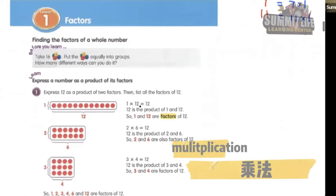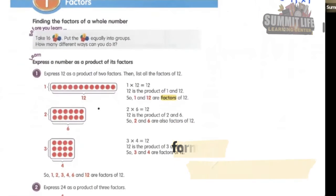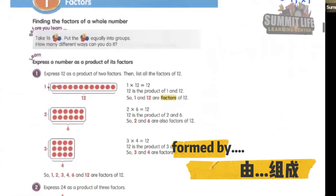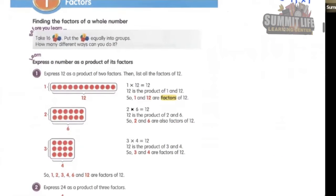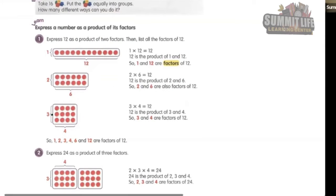12 can be formed by one times 12. It can also be formed by two times six — you can see two rows of six, it is also 12. It can also be formed by three times four — three rows of four — you also get 12.